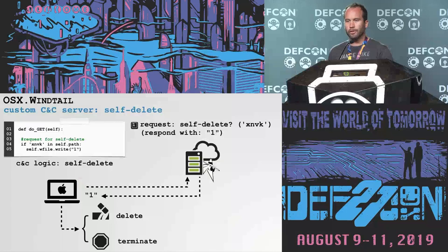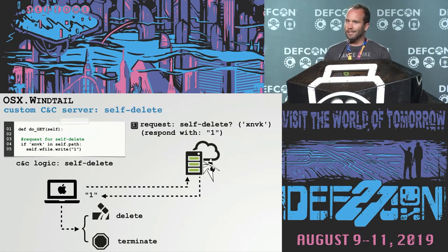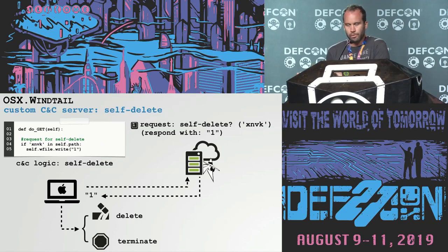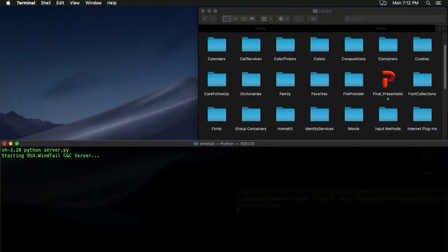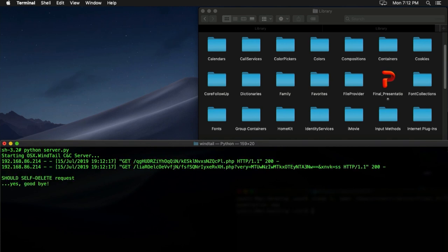Finally, let's add the ability to support the self-delete command in our custom C2 server. At some point, if the FBI comes knocking on your door, it might be really nice to just press a button and have all these infected systems uninstall themselves. It's trivial: when the malware connects out and asks 'should I self-delete?', we just respond with one, which tells the malware to fully uninstall itself. Demo shows the persistently installed implant — that orange logo application originally mimicking a PowerPoint document — connecting to our server, receiving the self-delete response, uninstalling itself, and then stopping beaconing because it's self-deleted.